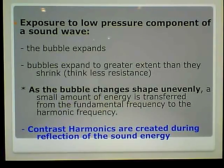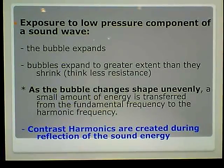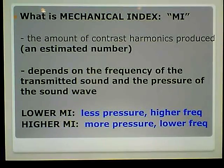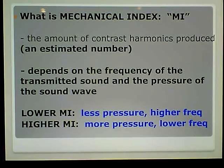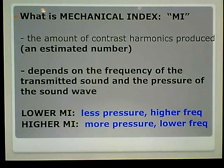We'll go over this in class again with more diagrams, but if you just understand what's happening, it's very simple. Now we're going to talk about something based around how we know how much harmonics is going to be created. It's called the Mechanical Index, or the MI.